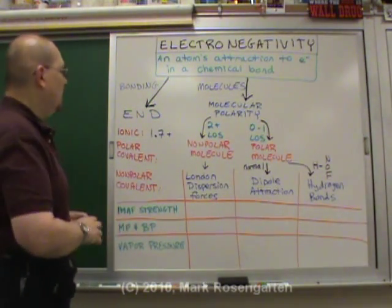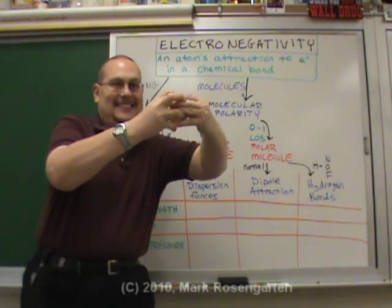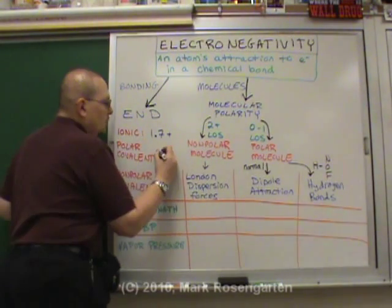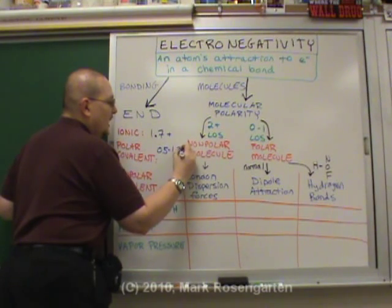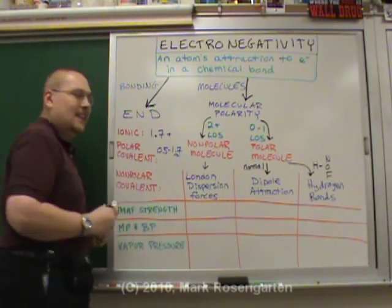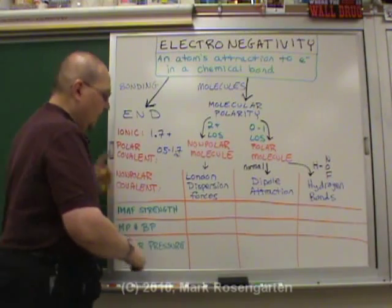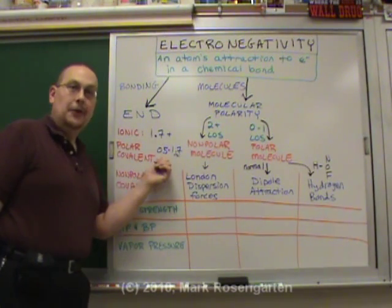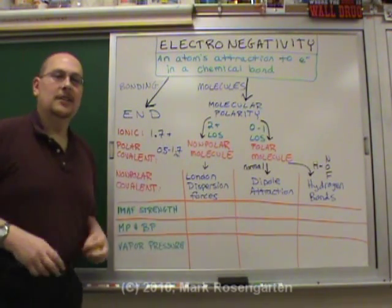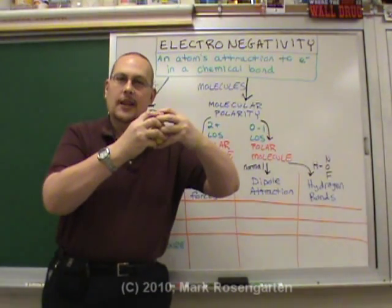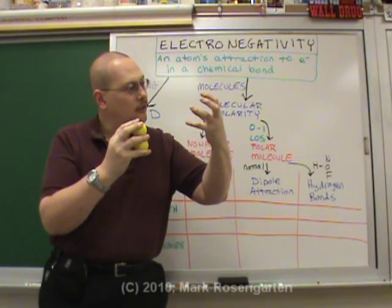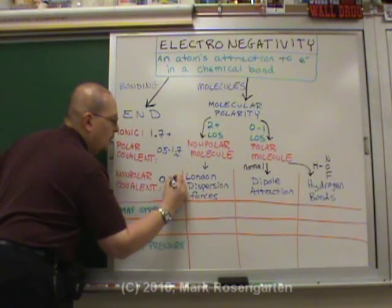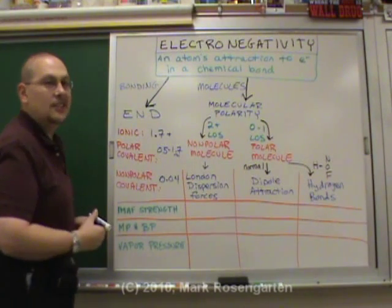Not all atoms want to share evenly. Sometimes you're going to have a difference in electronegativity where one atom wants the electrons a little bit more than the other atom. If the difference in electronegativity is on average 0.5 to 1.7 - with 1.7 being about 50% ionic and 50% covalent - that region would be considered polar covalent. For New York state standards, 0.5 to 1.7 is what we're going with. Non-polar covalent is when atoms share electrons evenly because they have the same electronegativity - an electronegativity difference of 0 to 0.4 is considered non-polar.